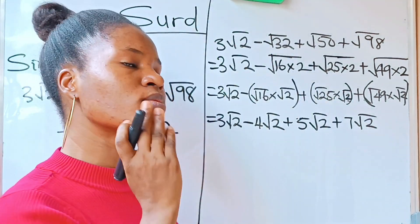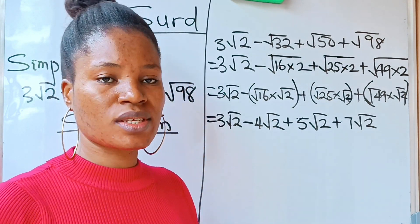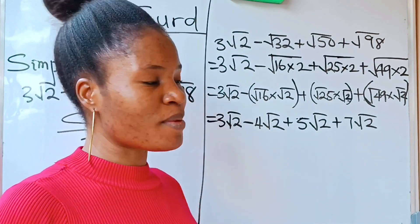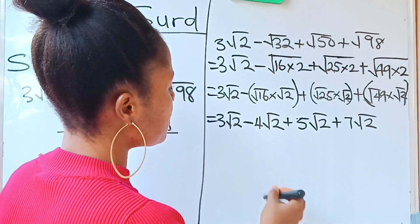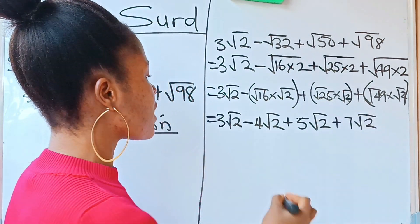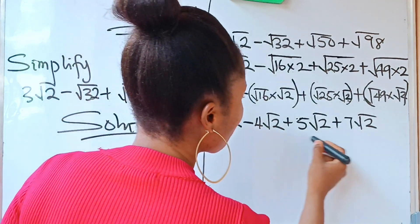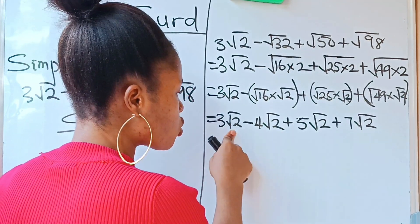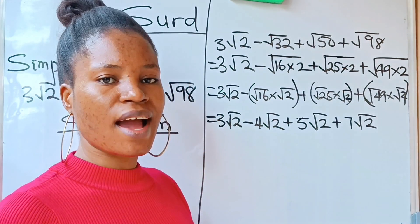There is something called similar surds. Similar surds are those numbers that have the same surd attached to them. Looking at our expression: 3√2, 4√2, 5√2, and 7√2 — notice that all of them have root 2. That means they are all similar surds.